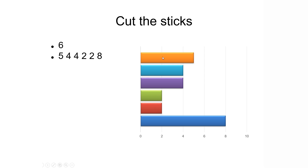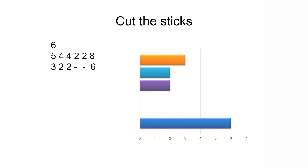Now, after cutting, the first stick will have a remaining portion of 3, the second one will have a remaining portion of 2, the third one will have a remaining portion of 2, the fourth and fifth sticks will be completely removed, and the sixth will have a remaining portion of 6. It looks somewhat like this.